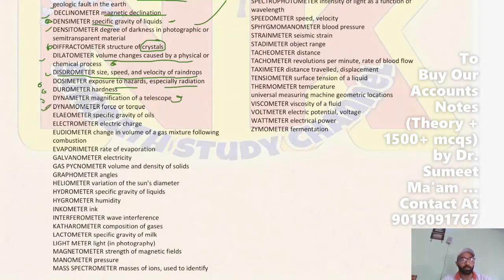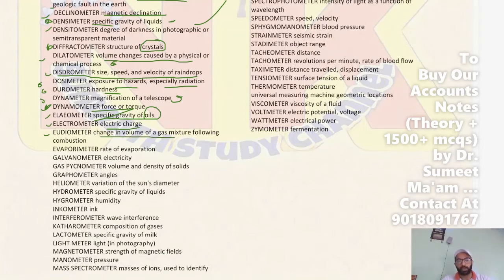Next, Elaeometer is used to measure the specific gravity of oils. Next, Electrometer is used to measure electric charge. Next, Eudiometer is used to measure the change in volume of a gas mixture following combustion.